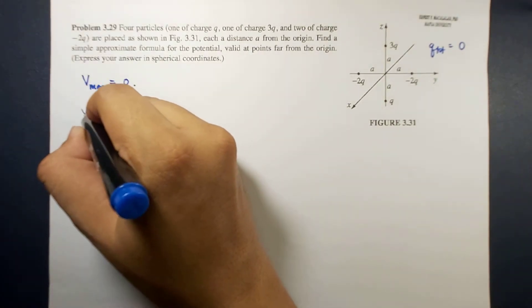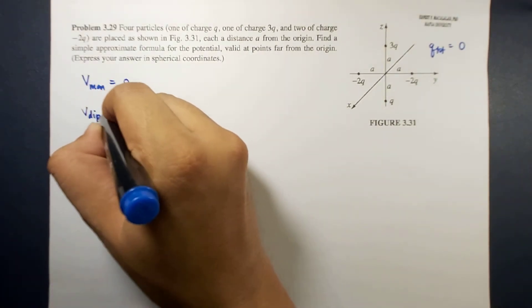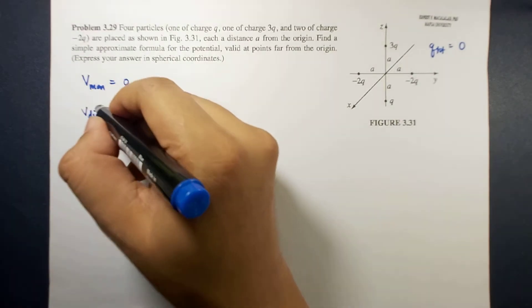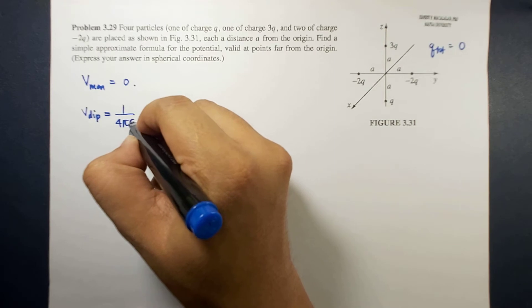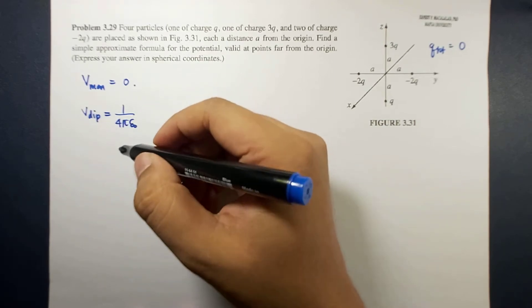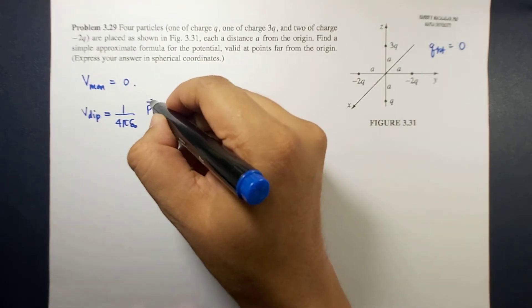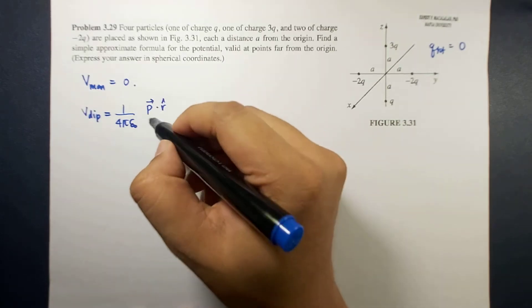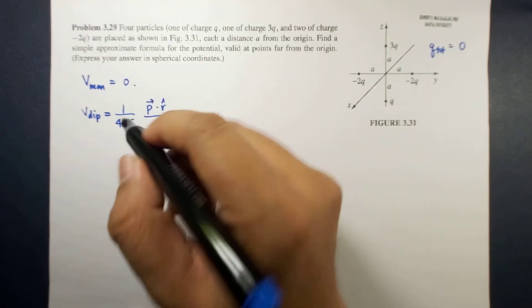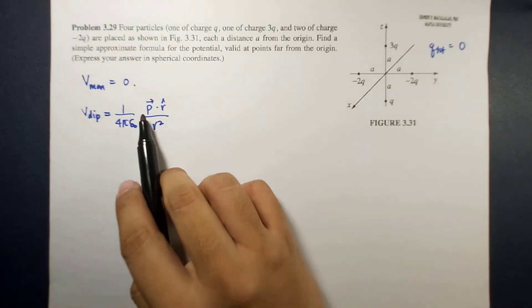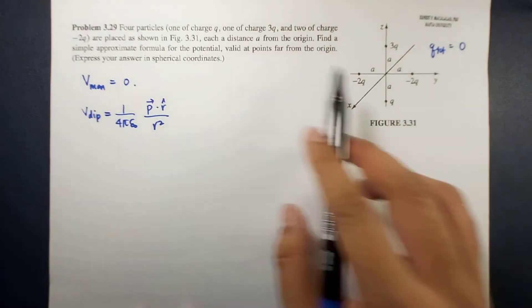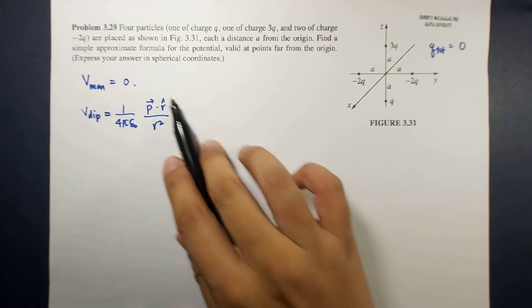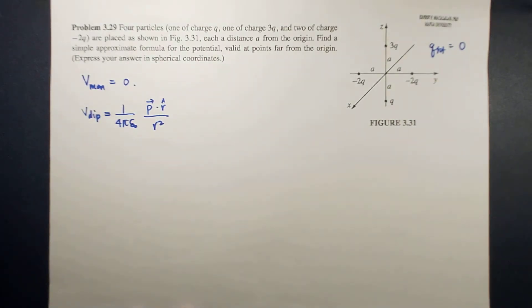We know that the potential of a dipole is equal to 1 over 4π epsilon naught times p dot r hat over r squared. That means we need to find the dipole moment vector of this configuration to calculate the dipole.